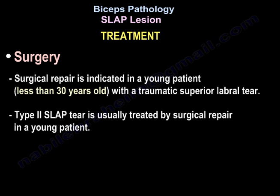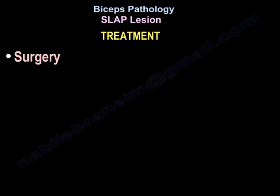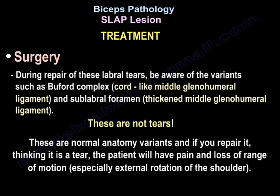Surgical repair is indicated in a young patient less than 30 years old with a traumatic superior labral tear. Type 2 SLAP tear is usually treated by surgical repair in a young patient. During repair of these labral tears, be aware of variants such as Buford complex, cord-like medial glenohumeral ligament, and sublabral foramen with thickened medial glenohumeral ligament. These are not tears — they are normal anatomy variants. If you repair them thinking they are tears, the patient will have pain and loss of range of motion, especially external rotation of the shoulder.